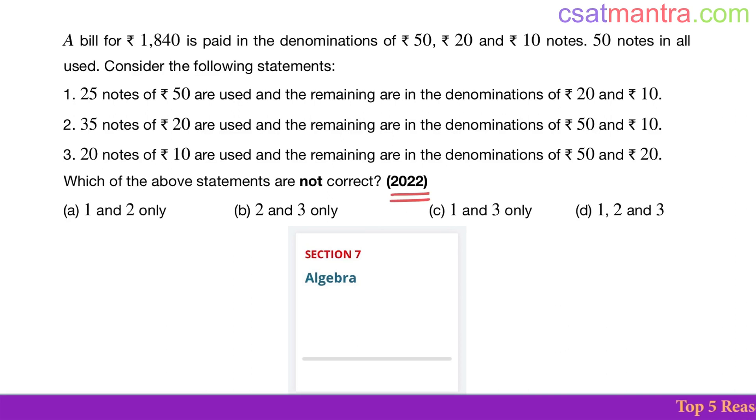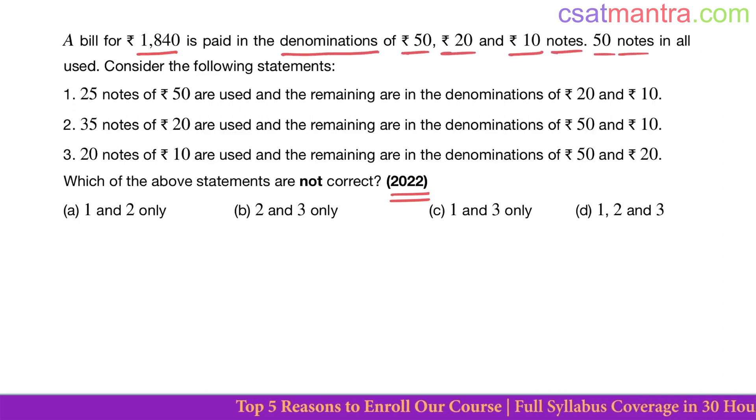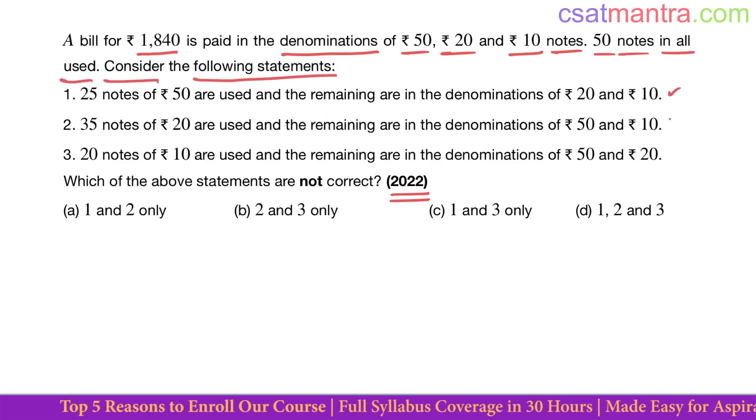This is a 2022 question based on algebra. A bill for ₹1840 is paid in denominations of ₹50, ₹20, and ₹10 notes. 50 notes in all are used. Consider the following statements: three statements are given. Which of the above statements are not correct?